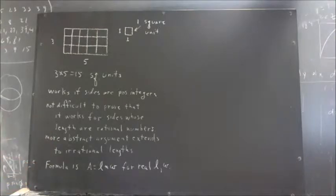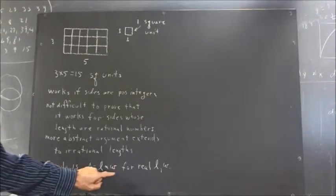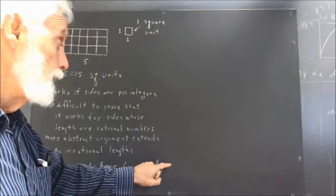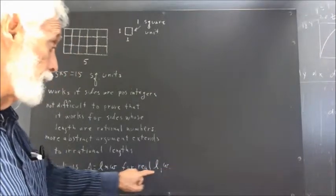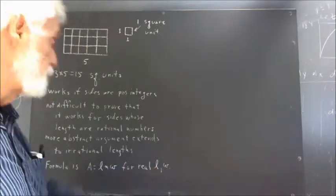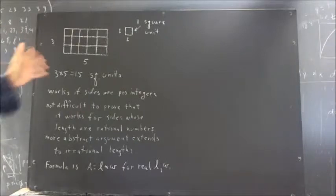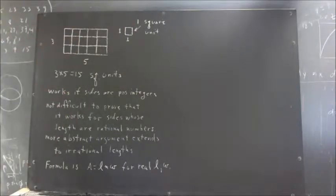But don't worry about that right now. That's for a more advanced course. Okay, so the point, though, is that the formula A equals L times W works for real length L and real width W. So if L and W are both real numbers, that means integers, rational numbers, or irrational numbers, the formula can be proven to work.